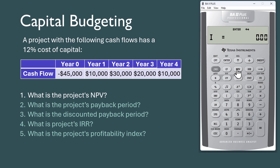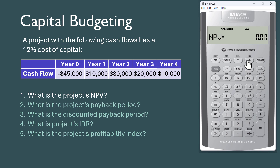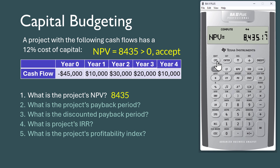Next press NPV. It's going to ask that you input I, which is the interest rate, discount rate, rate of return, or cost of capital. In this question it is 12 — press Enter. When you scroll down it's going to show NPV — press Compute. The NPV is 8,435, which is greater than 0. Therefore, they should accept the project.